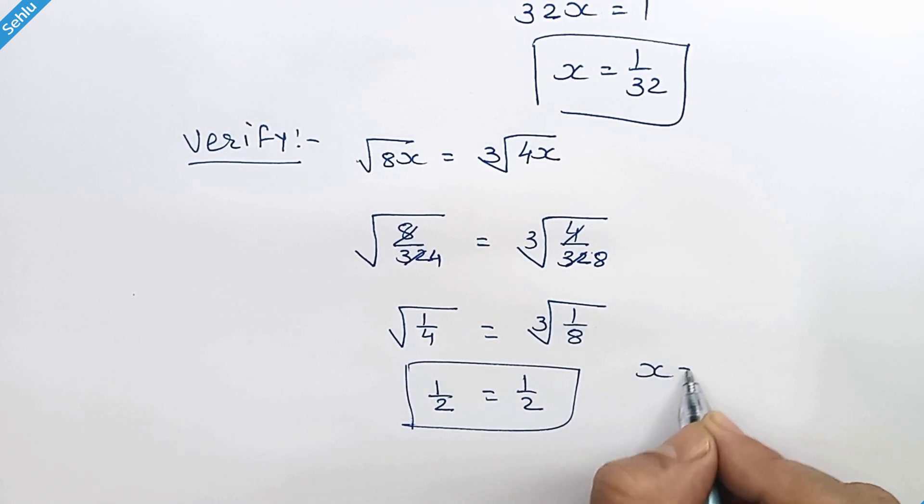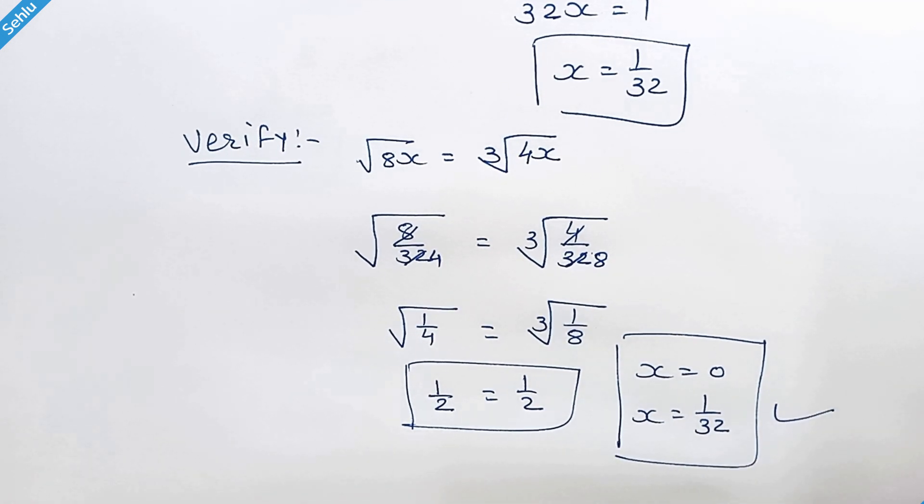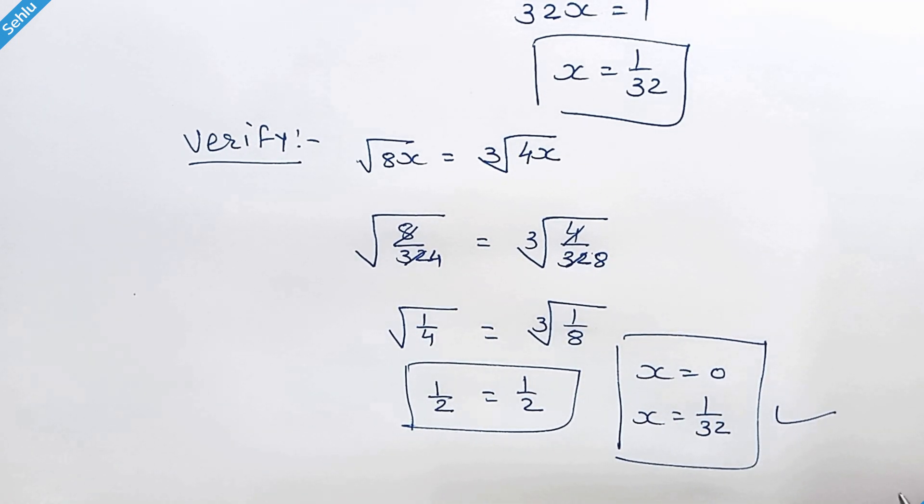So x is equal to 0 and x is equal to 1 over 32 are the correct answers. Thank you for watching. Don't forget to subscribe. See you in the next one. Bye-bye.